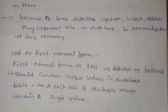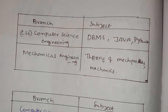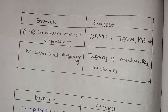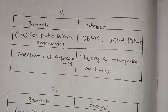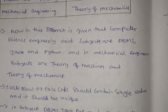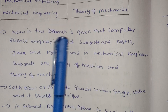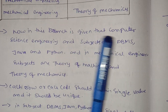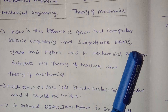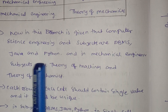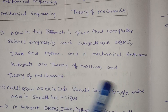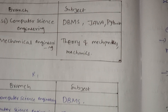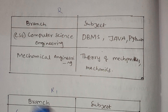Let me explain with an example. In this branch table, Computer Science has subjects: DBMS, Java, and Python. In Mechanical Engineering, subjects are Theory of Machines and Theory of Mechanics. Here we are going to look at the first relation — the first table.